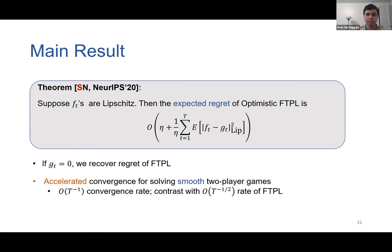Due to lack of time, I won't go into the proof of this theorem. One last thing to mention about this algorithm: when used for solving smooth two-player games, optimistic FTPL converges at a faster rate than FTPL to a Nash equilibrium. In particular, OFTPL converges at a 1/T rate, whereas FTPL only converges at a 1/sqrt(T) rate.